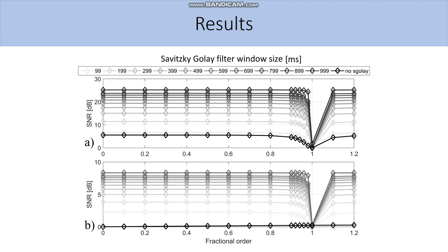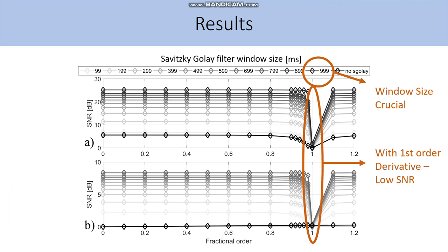The main conclusion is that window size of Savitzky-Golay filter is crucial and window size of 999 ms was optimal. Also, we didn't expect that the impact of different fractional orders was not very significant. The only thing that we can observe is that with first-order derivative, we have very low signal-to-noise ratio, so it is not recommended for this application.